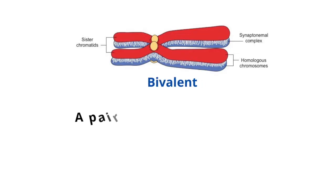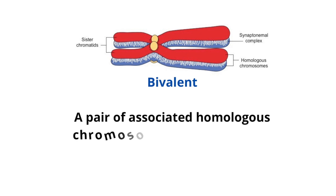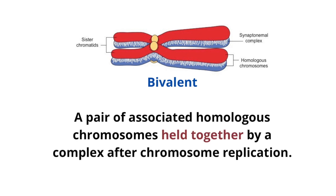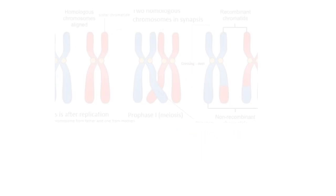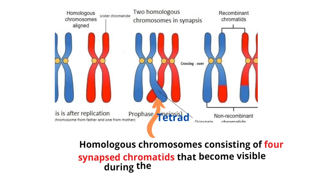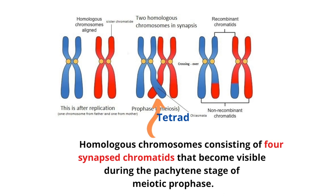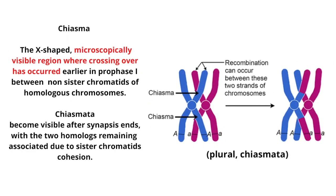Bivalent: a pair of associated homologous chromosomes held together by a protein complex after chromosome replication. Tetrad: homologous chromosomes consisting of four synapsed chromatids that become visible during the pachytene stage of meiotic prophase.